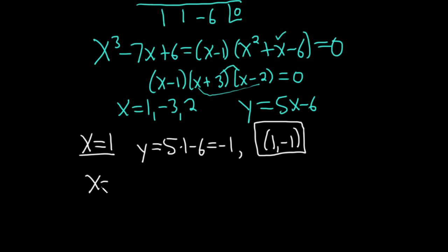When x is negative 3, we get y equals 5 times negative 3 minus 6. That's going to be negative 15 minus 6, which equals negative 21. So when x is negative 3, y is negative 21. So that's going to be negative 3, negative 21. That's another solution.